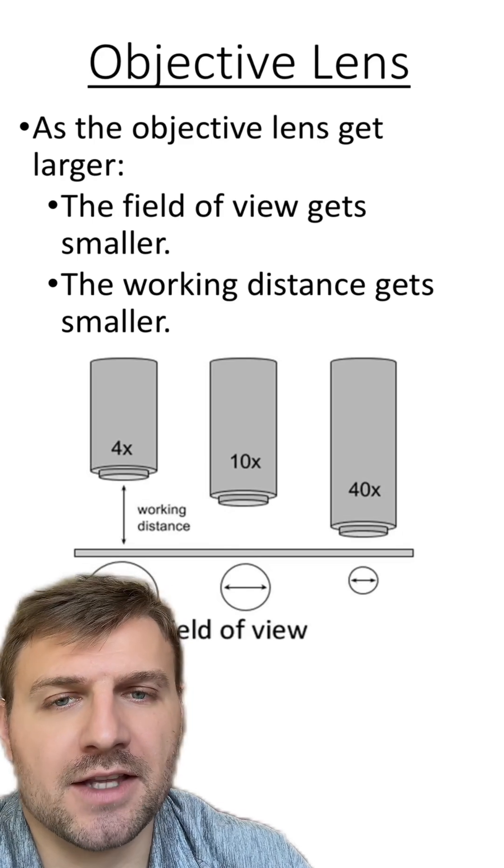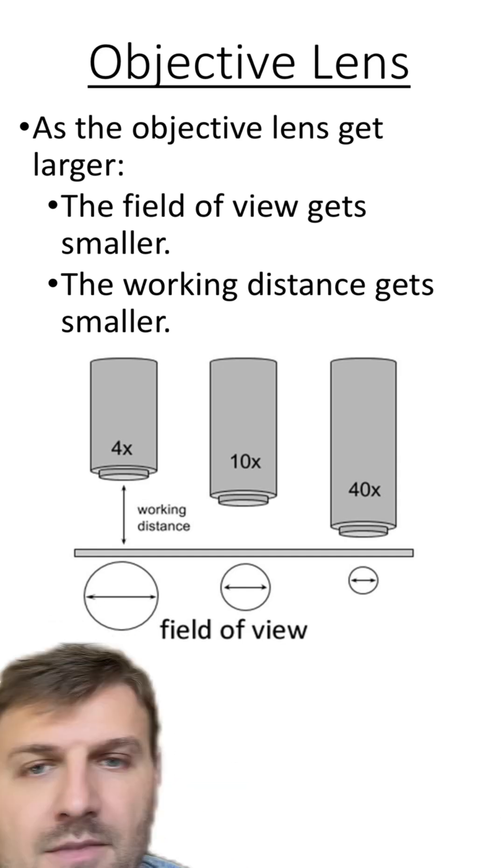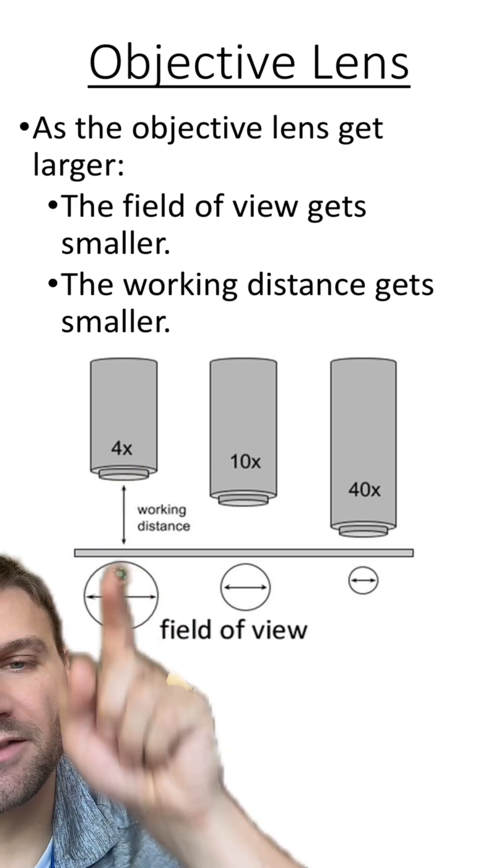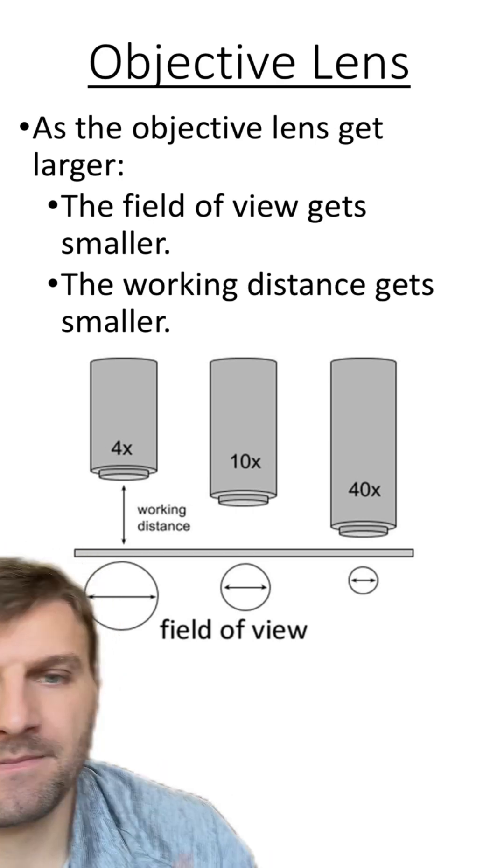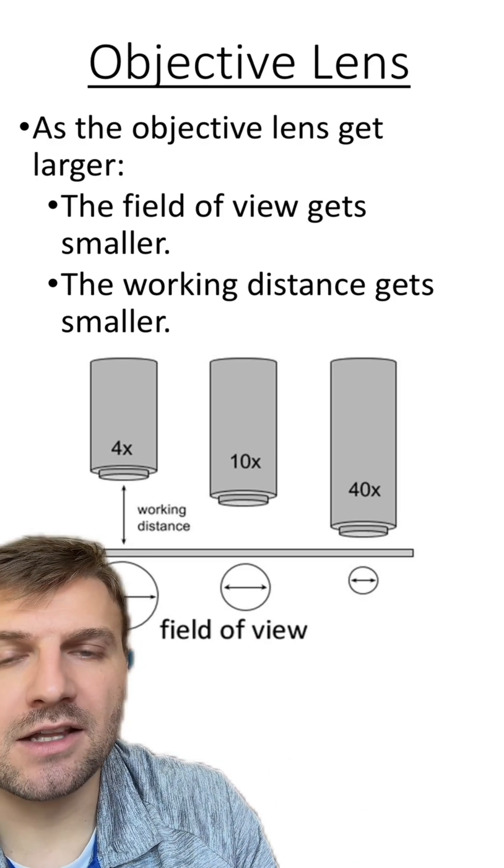Now, something you're going to notice: as the objective lens gets larger, the field of view, or how much you can see, gets smaller. The working distance, or the distance between the slide and the objective lens, is also going to get smaller as you move up the objective lenses. However, as you move up the objective lenses, you're going to see more detail in what you're looking at.